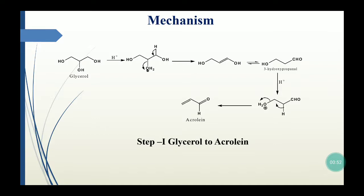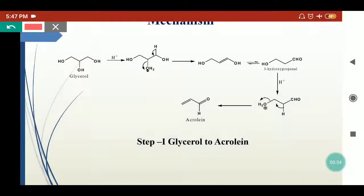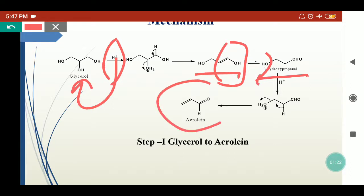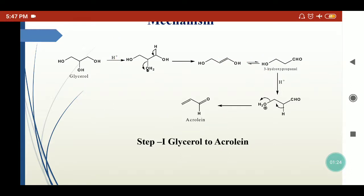Coming to the mechanism — first, glycerol is converted into acrolein in the presence of acidic media. When glycerol is treated with acidic media, the H+ ion goes to the hydroxyl group. In the next step, the water molecule eliminates by generating a double bond. Because it is an enol species, it converts into the carbonyl compound to give 3-hydroxypropanal. Due to the acidic media, the OH again releases as water, and we get acrolein.